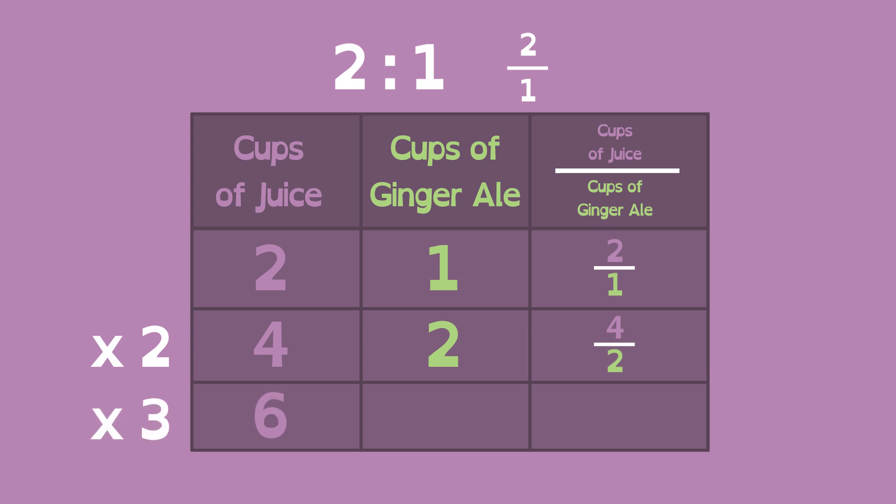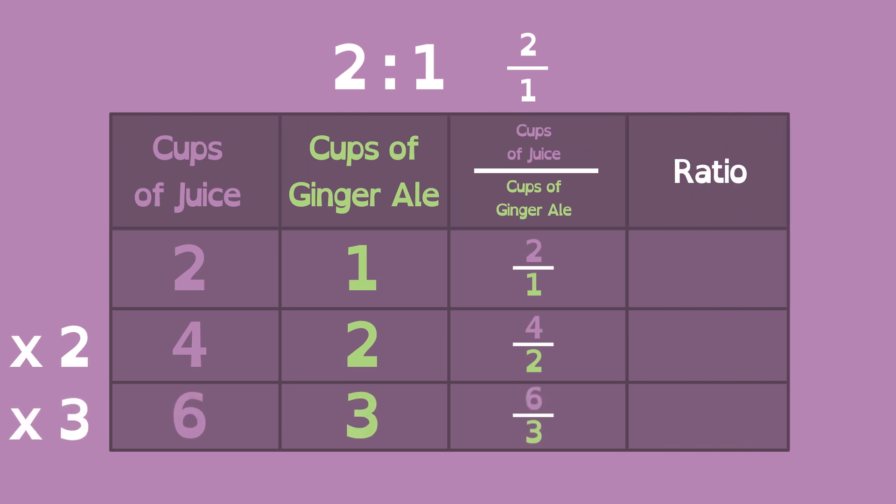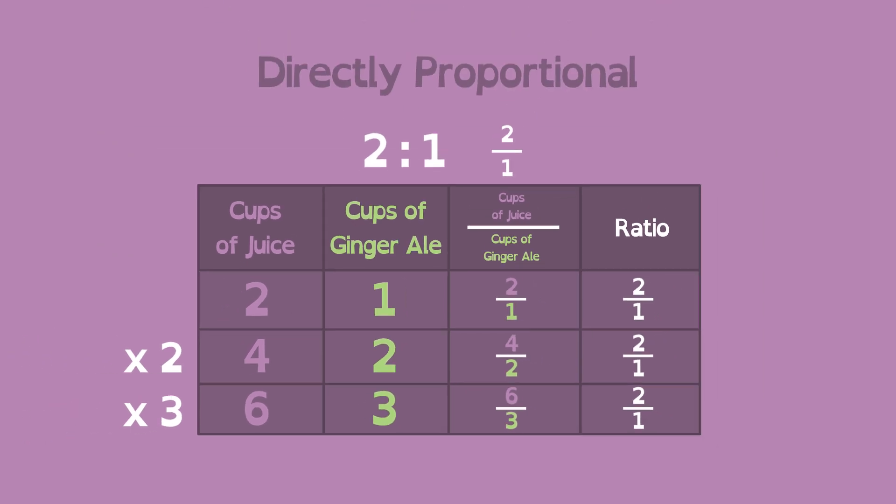If he triples his recipe, he'll need 3 cups of ginger ale. All the ratios of juice to ginger ale are equivalent. They all simplify to 2 to 1. This means that the relationship between the two quantities of juice and ginger ale are directly proportional.